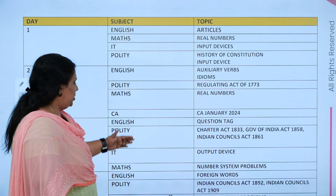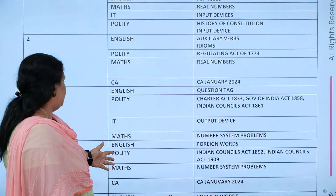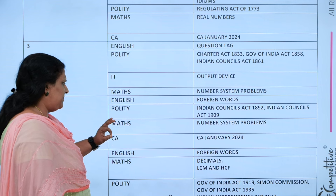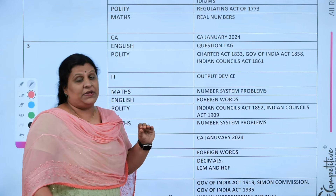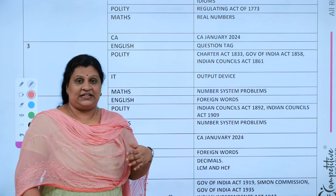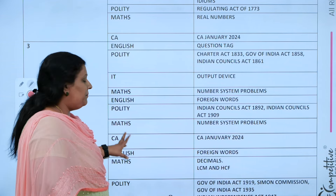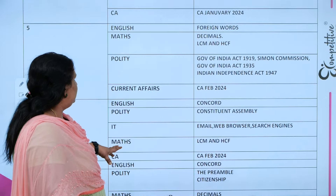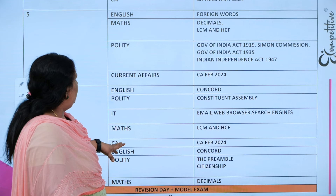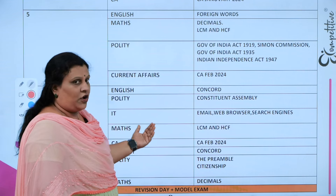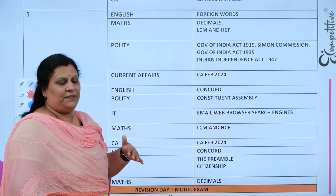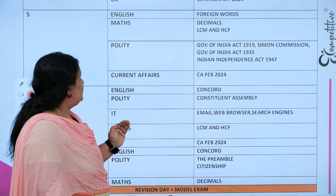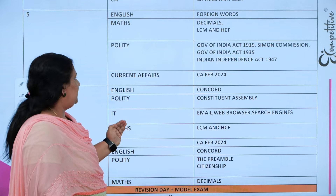We will learn about the schedule and foreign words on Day 4, along with politics. We will study Maths — number systems and problems — and prepare current affairs for January and February. Next, we will go to foreign words, decimals, LCM and HCF. LCM and HCF is aligned with current affairs for February.